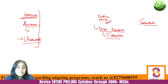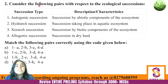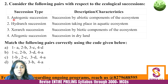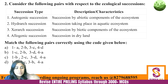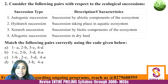Next question: Consider the following pairs with respect to ecological succession — autogenic succession, hydrarch succession, xerarch succession, allogenic succession. Number these A, B, C, and D. First, understand the concept of succession quickly.